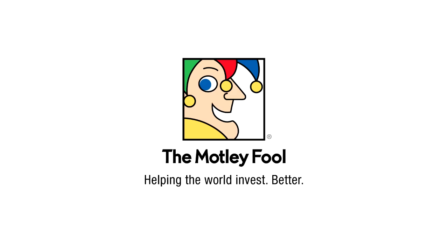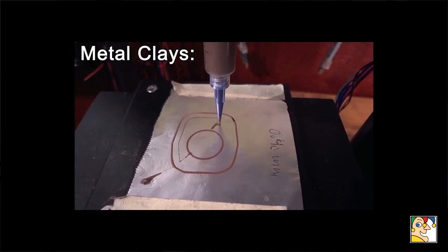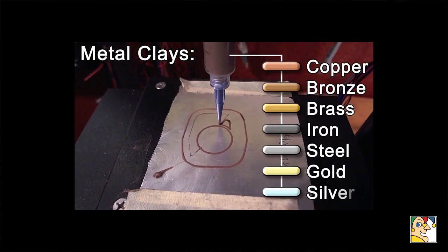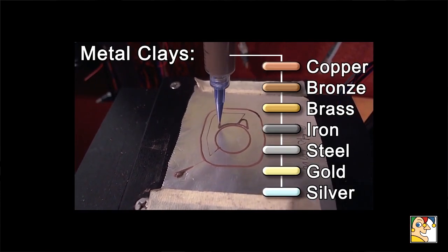Metal clays are available in precious metals like sterling silver and pure gold. You can also get them in bronze, brass, copper, steel, and iron. There are some other varieties in development too.